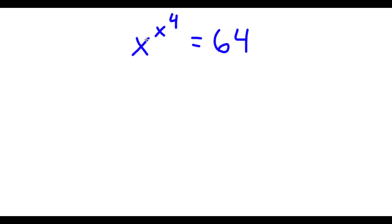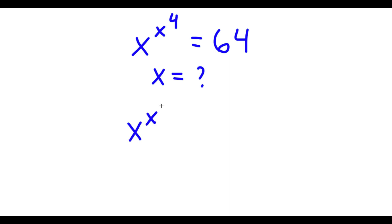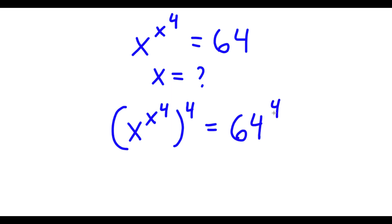In this problem, I have x to the power of x to the power of 4 is equal to 64. I need to find the value of x. For my solution, I'm going to first start by taking the power of 4 on both sides. So now I have x to the power of x to the power of 4, all to the power of 4, is equal to 64 to the power of 4.